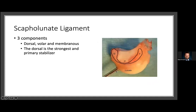As I'm talking about the dorsal aspect — the scapholunate ligament follows the shape of the lunate, kind of like a half moon. The dorsal aspect is actually the strongest part of the ligament — the one we're really evaluating most superficially on the dorsal view. But you do have a membranous and a volar component as well. Even if you see disruption at the dorsal aspect, you may still have some stability from the other portions.